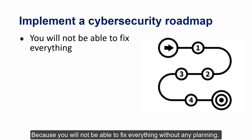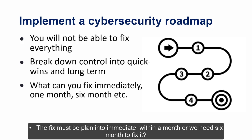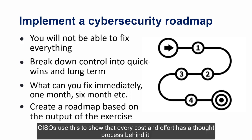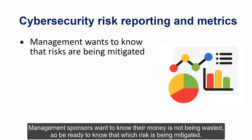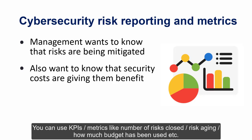The output of the entire exercise will be a cybersecurity roadmap with goals and timelines, because you will not be able to fix everything without planning. Break the roadmap into tactical and long-term goals. The fix must be planned into immediate actions or longer-term projects. The solutions and costs in this roadmap are all justified thanks to the risk exercise and can be shown to management or auditors. CISOs use this to show that every cost and effort has a thought process behind it. Give regular feedback to your management team on risk status using KPIs and metrics like number of risks closed, risk aging, and budget used.